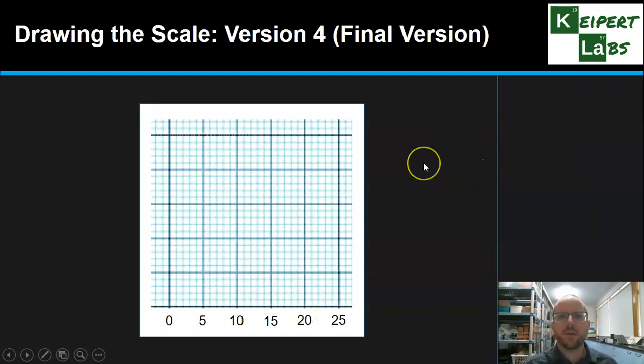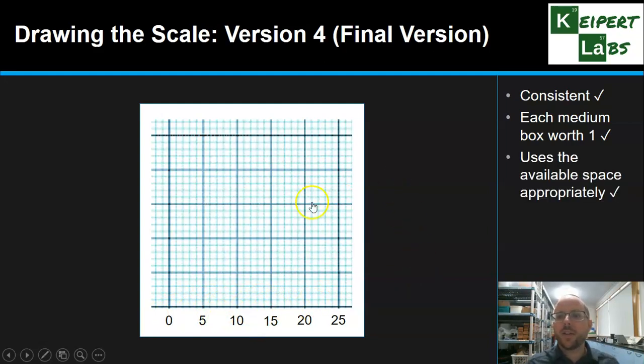So let's look at our fourth and final version that's taking into account each of these things. Going from zero to 25. So let's look at what we talked about. Yes, it's consistent. It goes up by fives each time. So it's nice and evenly spread out. Each medium box is worth one. So we're going up by ones in the little boxes in between, even though we don't need to write out each one. We can work that out. Good. It uses the available space appropriately. We've spread it out nicely in this area. It's big enough to be able to fit our largest number, but we've used the space as best we can. So this is the scale that is going to be the one we choose and use. Far more useful.